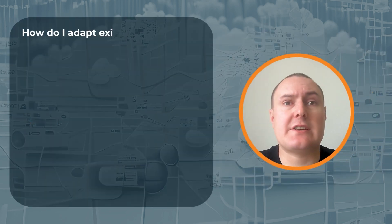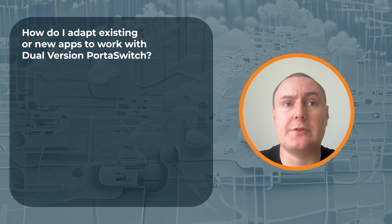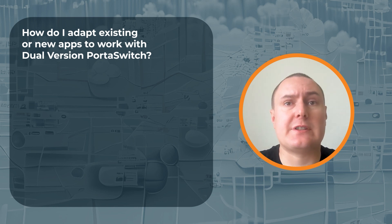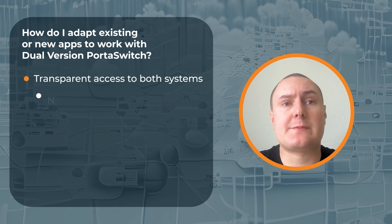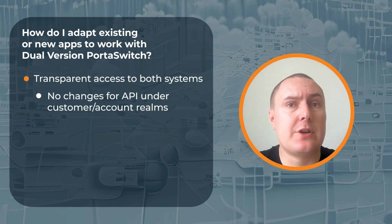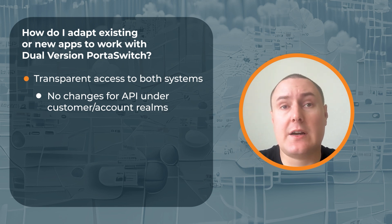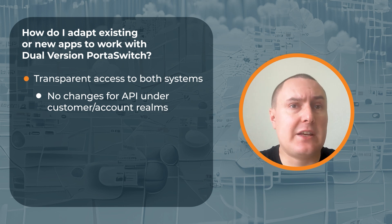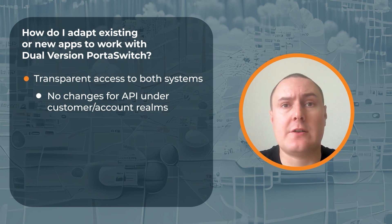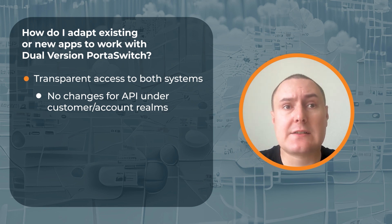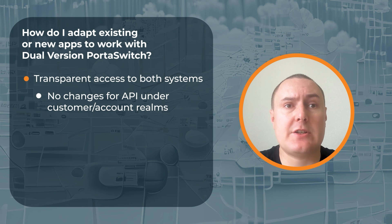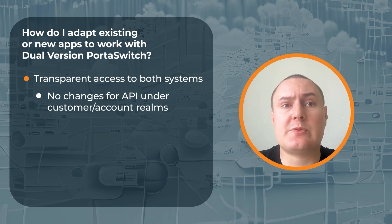What are your recommendations on adapting existing or new apps to work with DualVersion portal switch? The API methods in DualVersion portal switch can support a few different execution modes. First, there is transparent access to both systems. In this mode, no additional actions are required in order to access either the source or the target system. The applications that use API with customer or account credentials don't require any changes. Everything will work out of the box, as the customer or account can be active only on one system at a time. Upon authentication, web dispatcher detects where this customer or account resides and sends all subsequent requests there.